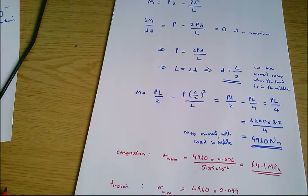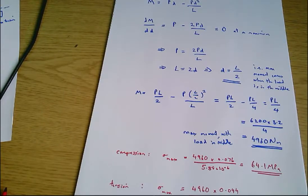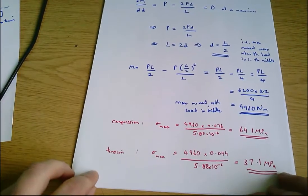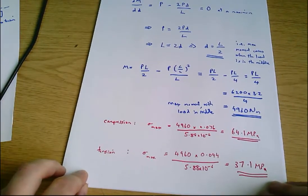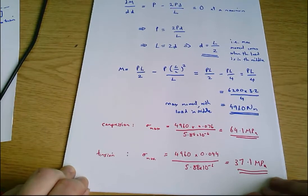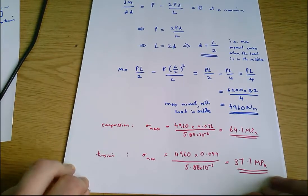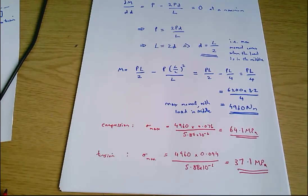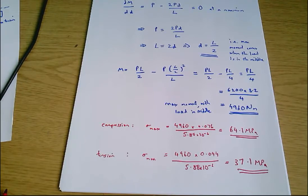This is exactly the kind of calculation you'd do when designing a simple bridge: moving the load across, finding that the maximum moment occurs when the load is in the middle, and then designing the bridge to be strong enough based on that worst case.